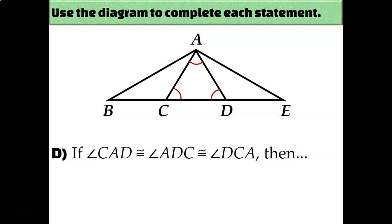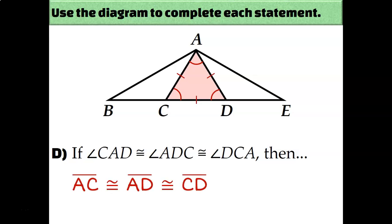What if all three angles of the center triangle are congruent? It's equiangular, so it must also be equilateral — meaning AC is congruent to AD, which is congruent to CD. This is actually the same as the first question in this set, just in reverse.